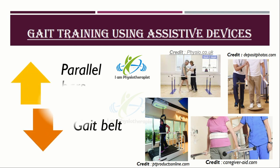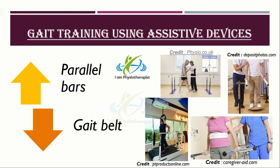Parallel bars may be used to help with gait training, especially in the early stages when a patient is first learning or relearning to walk. They involve a person walking between two handrails to support themselves, often with the therapist either helping to support the patient or physically moving the patient's legs. A gait belt is also utilized by the physical therapist to support the patient and to prevent them from falling or placing too much weight on the injured leg.